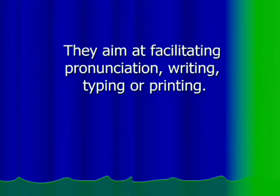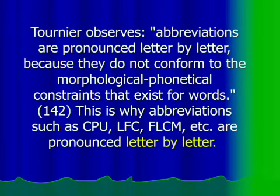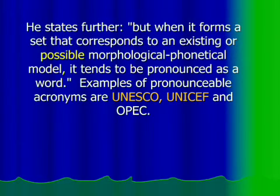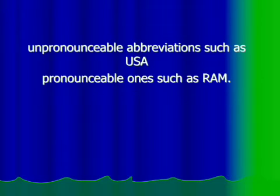Abbreviations aim at facilitating pronunciation, writing, typing, or printing — here we shorten speech and abbreviate long sentences, long phrases, or very long names of organizations or places. Sometimes abbreviations are pronounced letter by letter, such as CPU, LFC, FLC. Sometimes we read them as one word, like UNESCO or UNICEF, because of the morphological and phonetical structure — between each consonant we can meet vowel sounds. So sometimes we can see unpronounceable abbreviations such as USA, as well as pronounceable ones like RAM.